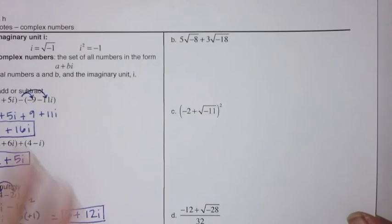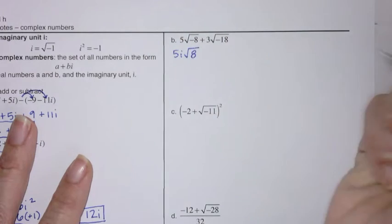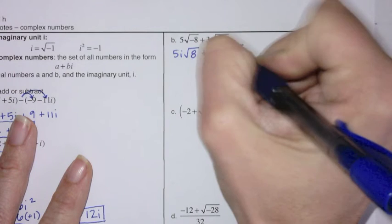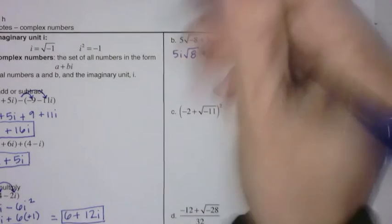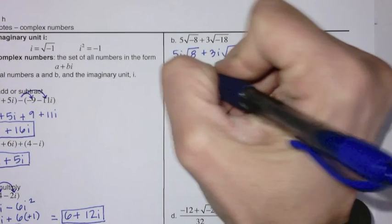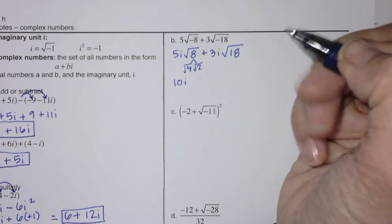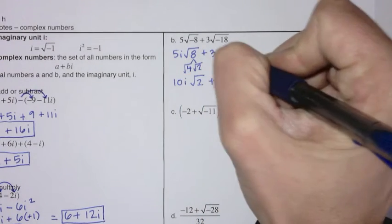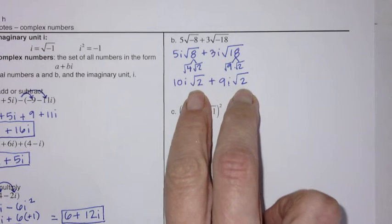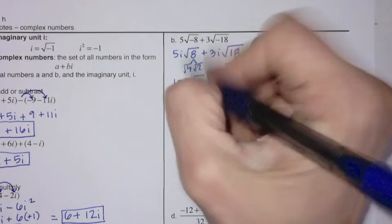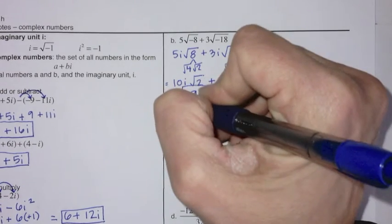Let's put this into practice. Get the negative out by placing i out front. Then simplify the remaining radicals — remember, leaving a perfect square under a radical is not appropriate. So the square root of 8 becomes 2 root 2, giving 5 times 2 times i root 2, which is 10i root 2. Similarly, the square root of 18 becomes 9i root 2. Since both terms have the same radicand, they are like terms: 10i root 2 plus 9i root 2 equals 19i root 2.